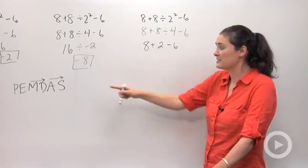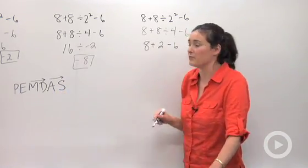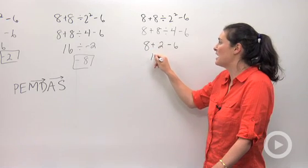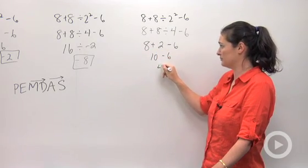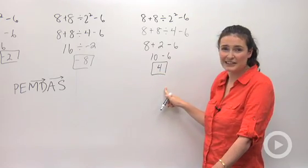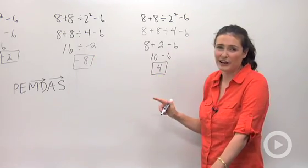My final step is to do the adding, subtracting from left to right. So I'll have 10 take away 6, which is 4. This is the correct answer. Both of those people got it wrong.